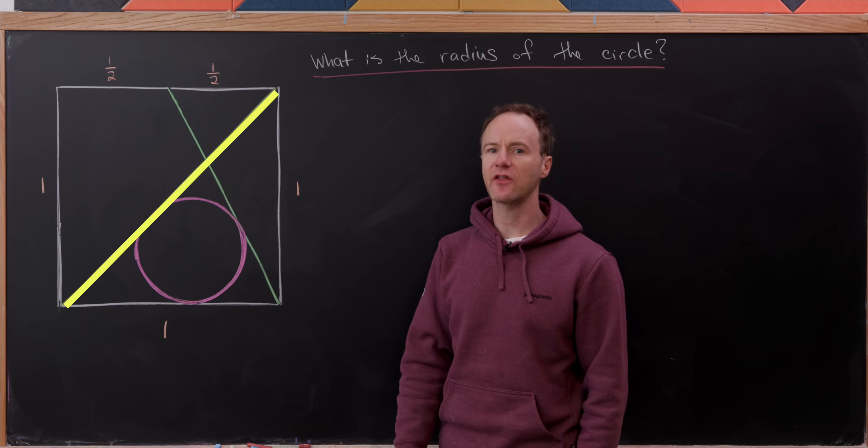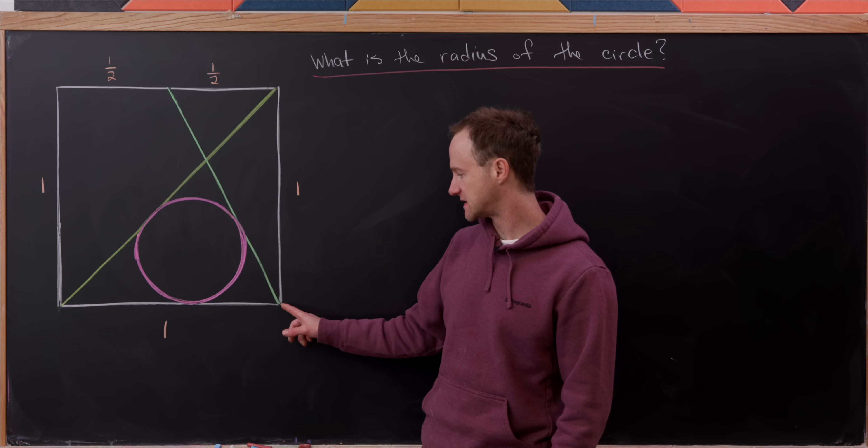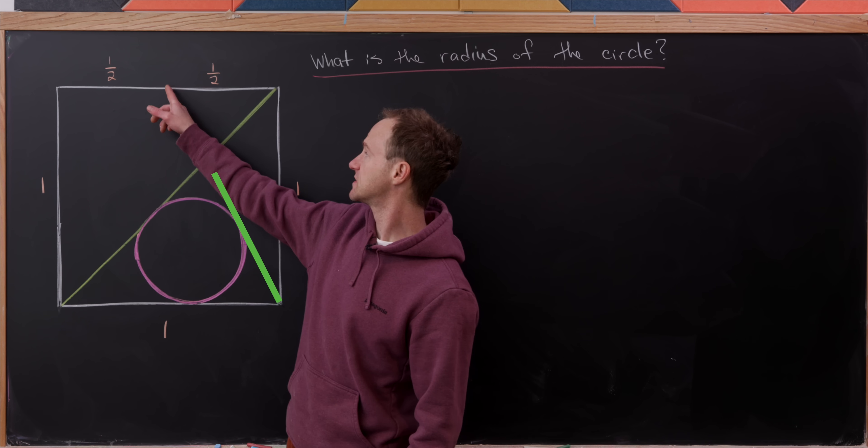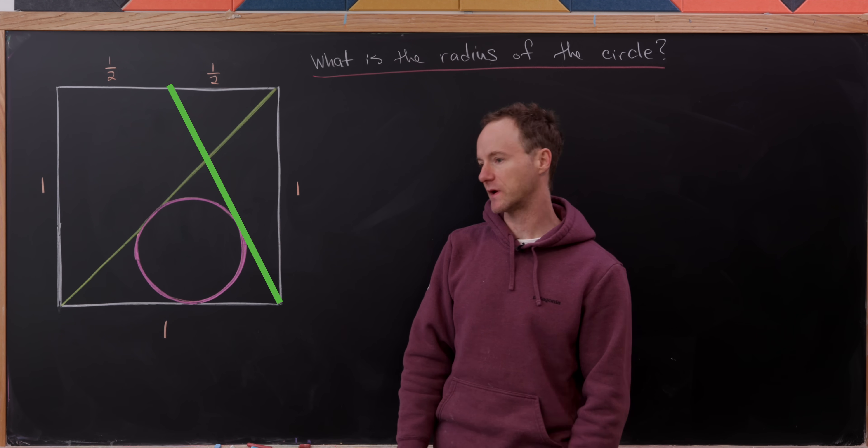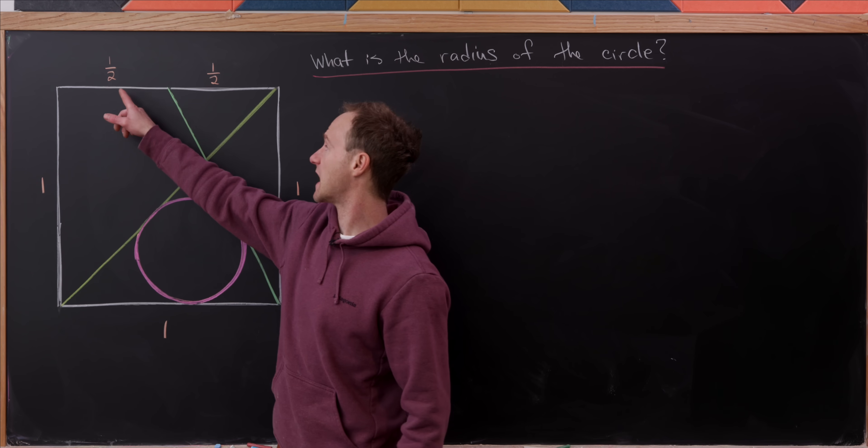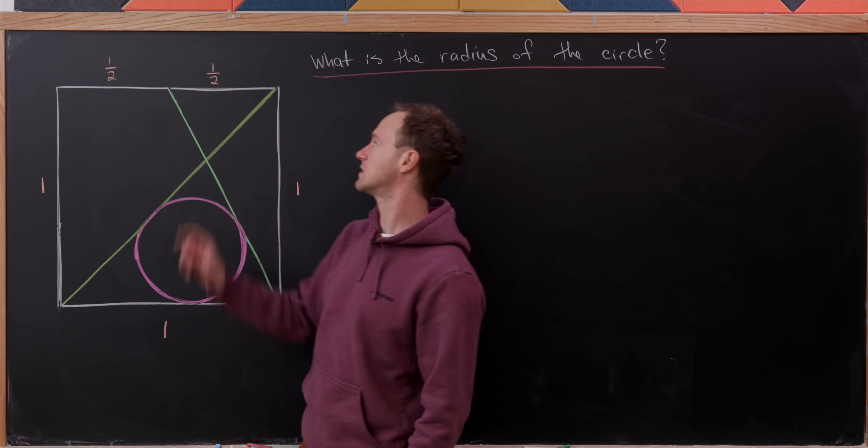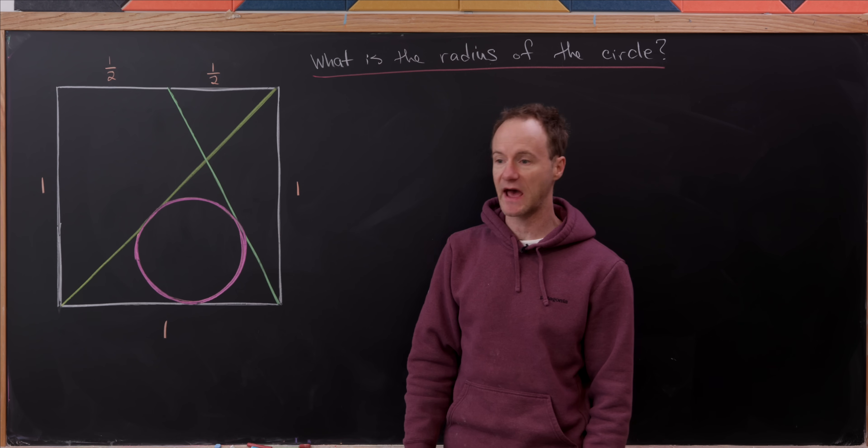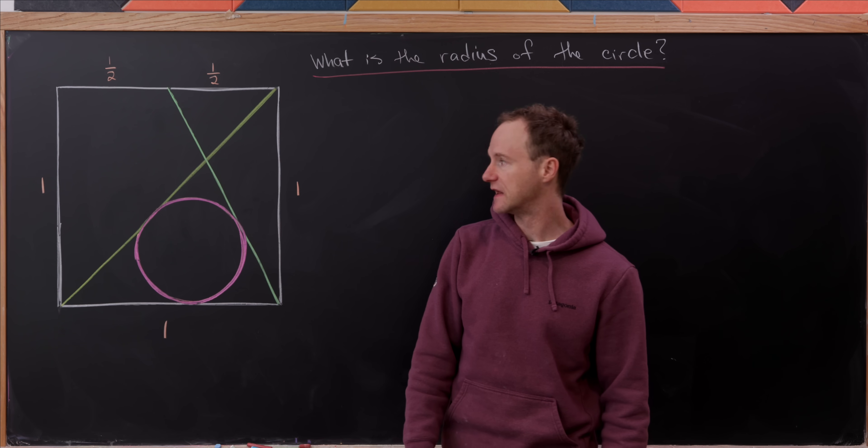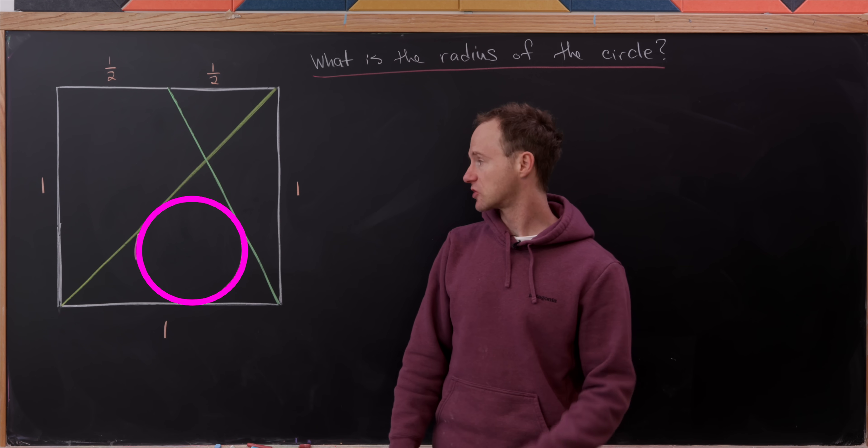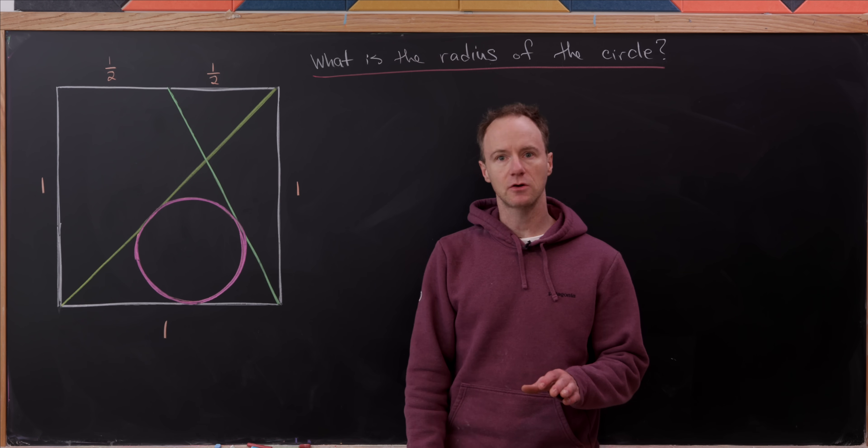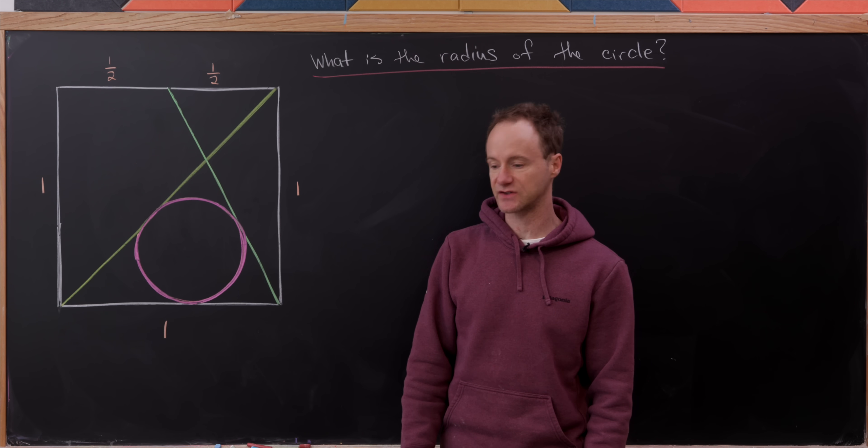Then we're going to add another line segment as well. It starts from the vertex down here at the bottom right, and then it intersects the top edge at its midpoint. Since this is a unit square, that means it intersects this and splits it into two line segments of length one-half. We've got this natural triangle that's created in the bottom, and we inscribe a circle inside of that triangle. Our goal is to find the radius of this circle.